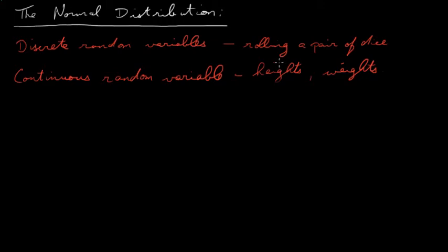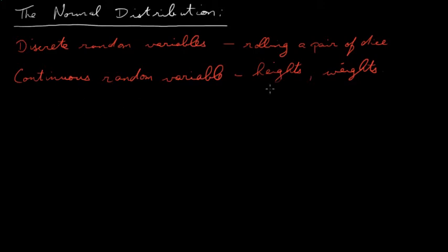They're random because the outcomes are unpredictable, and they vary from roll to roll, so they're variables as well. Continuous random variables are variables like heights and weights. If you take someone who's 70 kilograms and someone else who's 71 kilograms, there's an infinite number of weights between those two, so the weights are continuous.